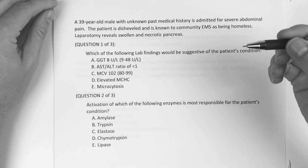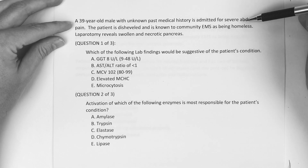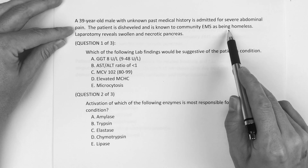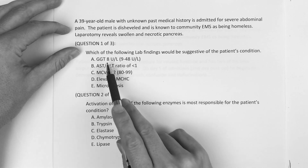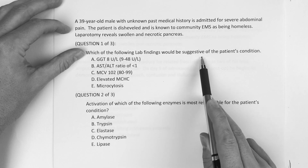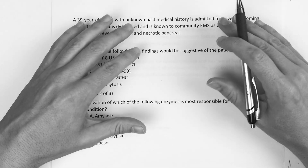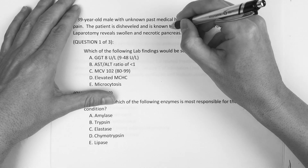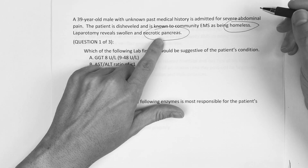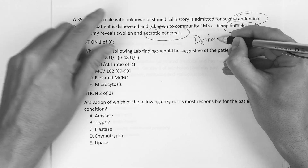The first question reads: a 39-year-old male with unknown past medical history is admitted for severe abdominal pain. The patient is disheveled and is known to community EMS as being homeless. Laparotomy reveals a swollen and necrotic pancreas. There are three questions to this. The first one asks: which of the following lab findings would be suggestive of the patient's condition? You have to go with the clues they give you. The guy's homeless with a necrotic pancreas and abdominal pain, so the diagnosis is pancreatitis.